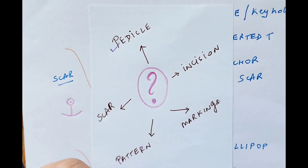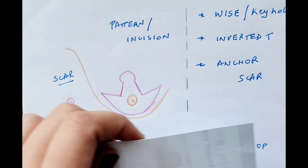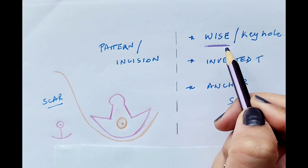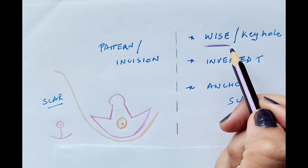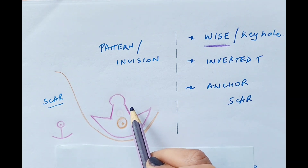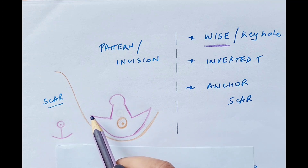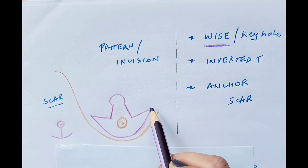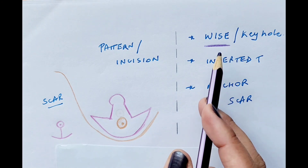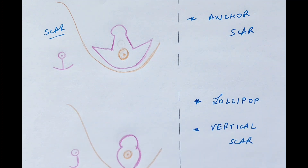Now, what are the different scars, incisions, and patterns used? The most popular is the Wise pattern technique, popularized by Wise, which is still very popular because it is highly reproducible and can be used for breasts of different shapes and sizes. It is also known as the keyhole pattern technique. The incision around the NAC is semicircular, with two vertical limbs and two horizontal limbs connected at the level of the inframammary fold (IMF). The final scar pattern is in the form of an inverted-T or anchor shape — hence the different terminologies used for the Wise pattern breast reduction technique.